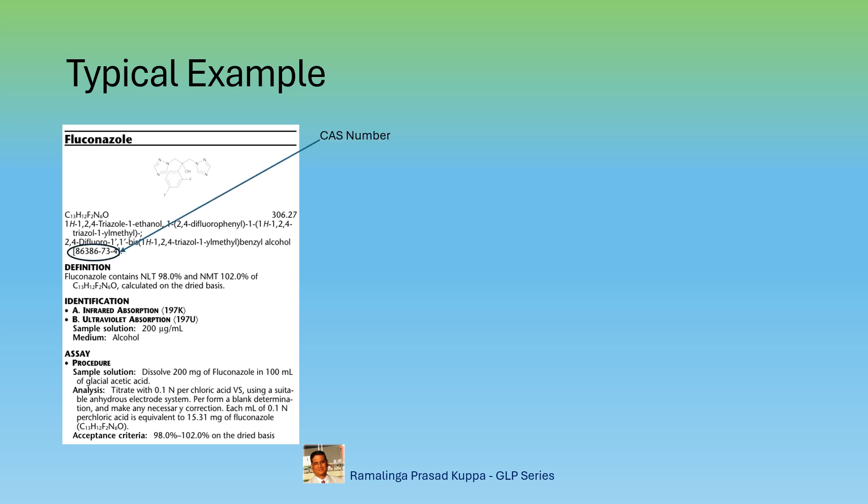This is CAS registry number. CAS is Chemical Abstract Services, which is in the USA. Wherever it prescribes to calculate the assay on a dried basis, you have to apply the correction for LOD. KF correction also should be done wherever water content by KF is carried out separately in addition to LOD.